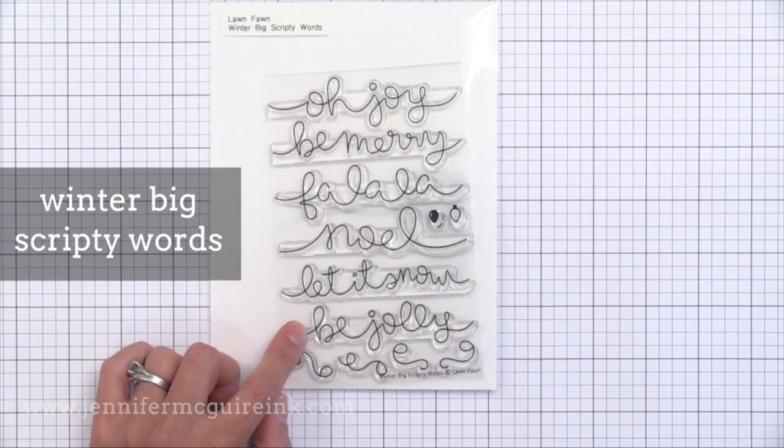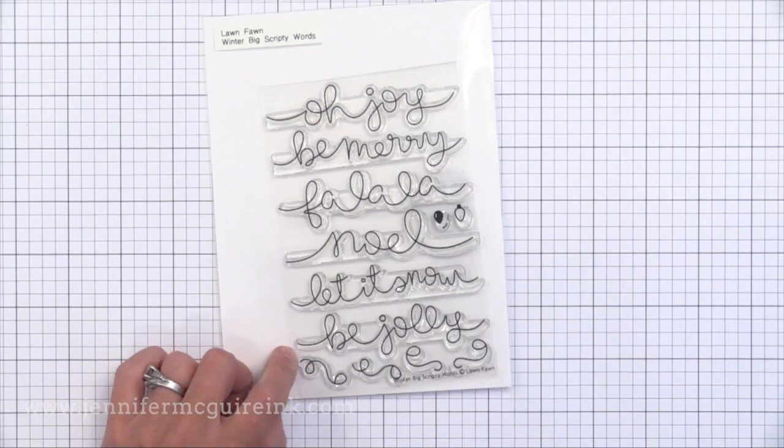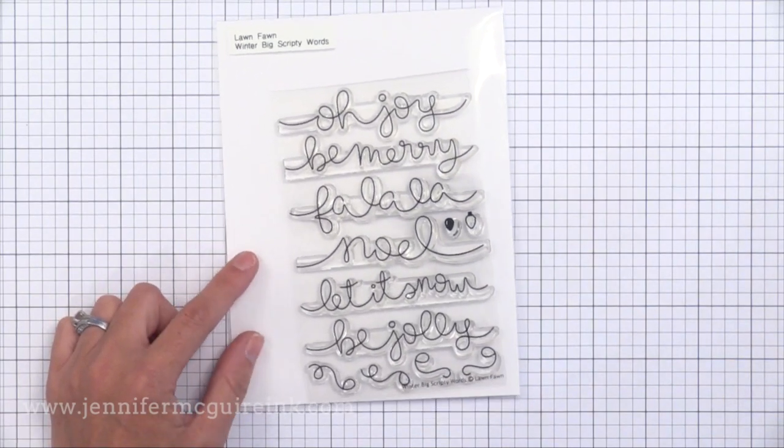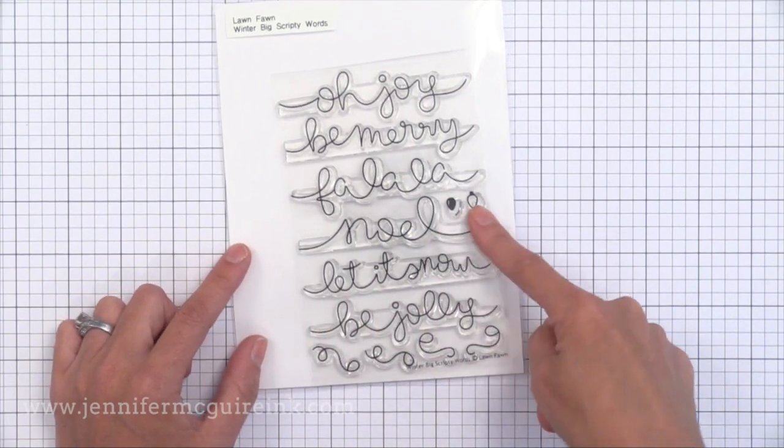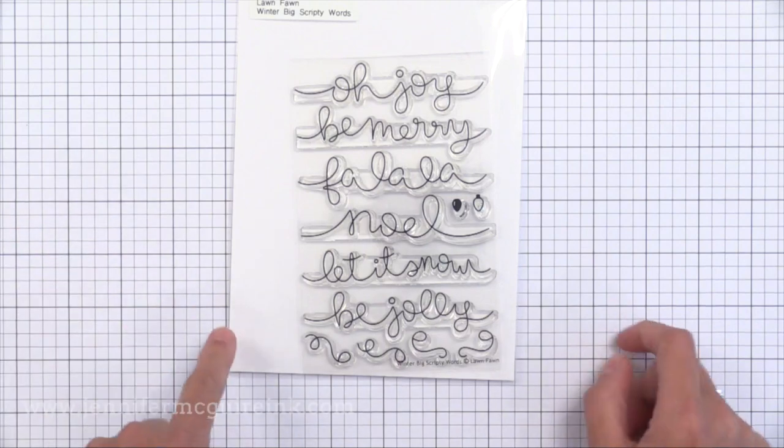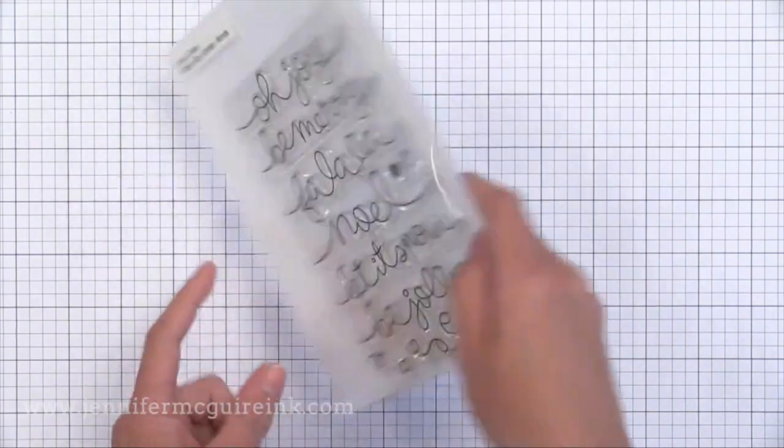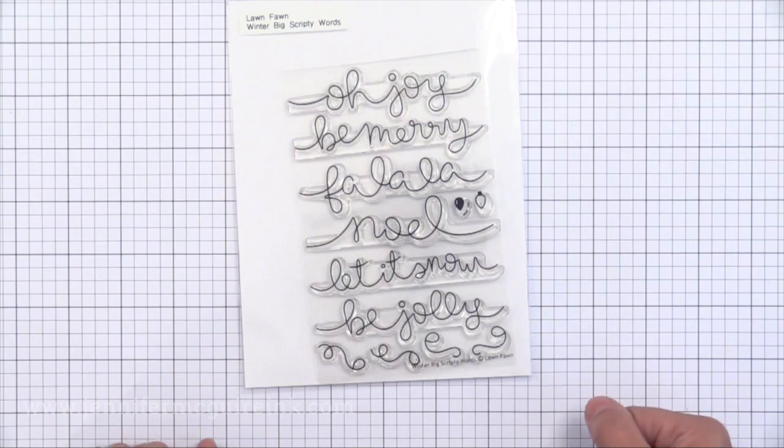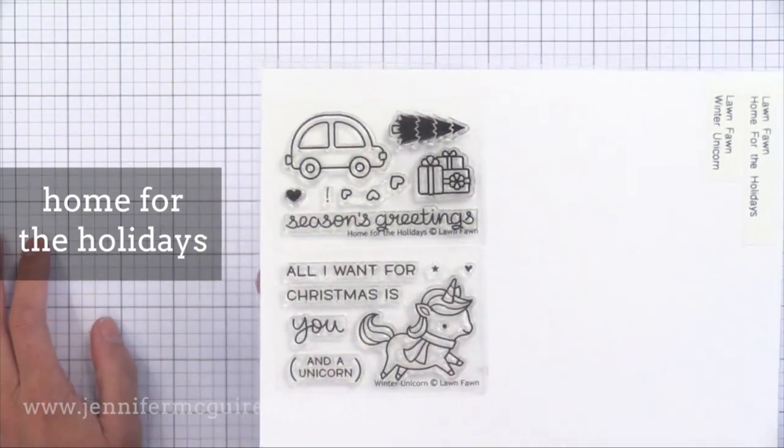We have the Winter Big Scripty Words. These are great because they really fill the card nicely. They include the little strings or the little doodads on the bottom so you can extend the word to make it longer. And then you can hang those little lights on it so it looks like a string of lights. What's really awesome is there is a coordinating die set. So you can cut out these script words. What I think would be great is if you do photo cards like me for the holidays, you can do a large photo, then stamp and die cut maybe Be Jolly and then put some little lights on it and decorate those little lights with maybe some red stickles and put that right over your photo. It's a fun way to make a photo card a little more interesting, a little more handmade.